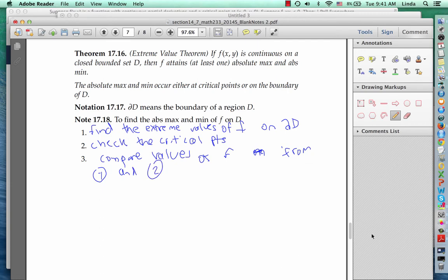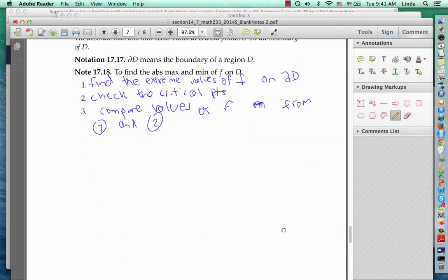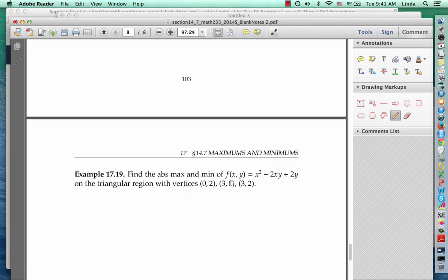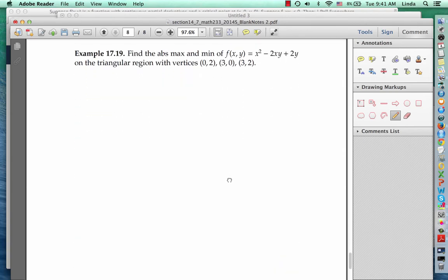Let's do an example. Let's find the absolute max and min of the function given on the triangular region, which I'll draw over here. So this triangular region has three sides, a top, a right side, and a slanted side. And we'll need to check for extreme values on all three of those sides, as well as in the interior.